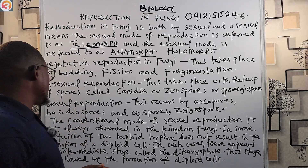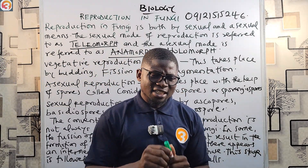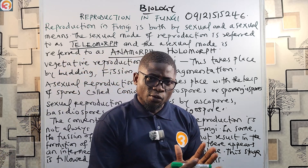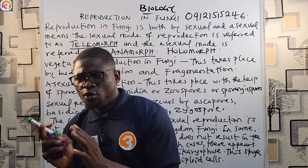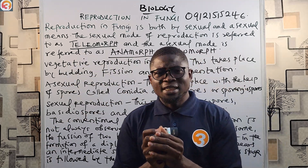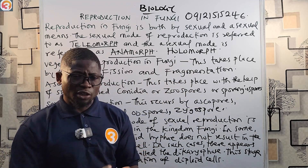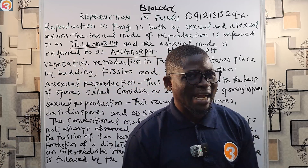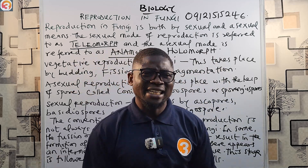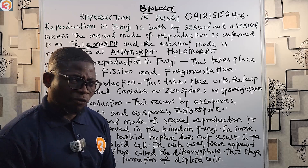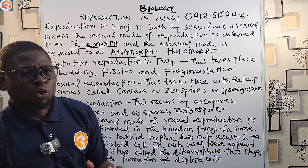The conventional mode of sexual reproduction is not always observed in the kingdom Fungi. In the conventional mode, the spores and the initial hyphae have only one copy of each chromosome — they are haploid. When one haploid mycelium meets another compatible haploid mycelium, they fuse together to form a diploid cell.